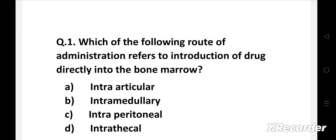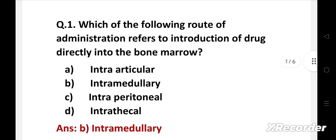First question: which of the following route of administration refers to introduction of drug directly into the bone marrow? Option A: intra-articular, B: intramedullary, C: intraperitoneal, D: intrathecal. Right answer is option B, intramedullary. Administration of drug into the bone marrow is called intramedullary. This route is now rarely used.